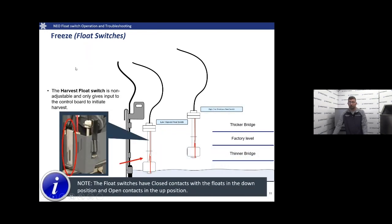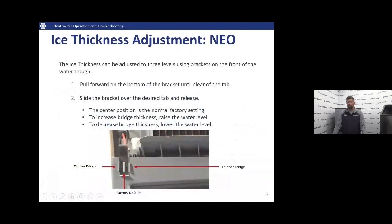The harvest float is not adjustable — that's the purpose of that cutout in the bracket. Its only job is to tell the control board that we are out of water, the ice is thick enough, and it's time to go into the harvest cycle. Remember that the float switches have closed contacts with the float in the down position and they are open in the up position. To adjust the ice thickness float: the leftmost bracket notch gives a thicker bridge, the rightmost gives a thinner bridge, and the middle is our factory setting.